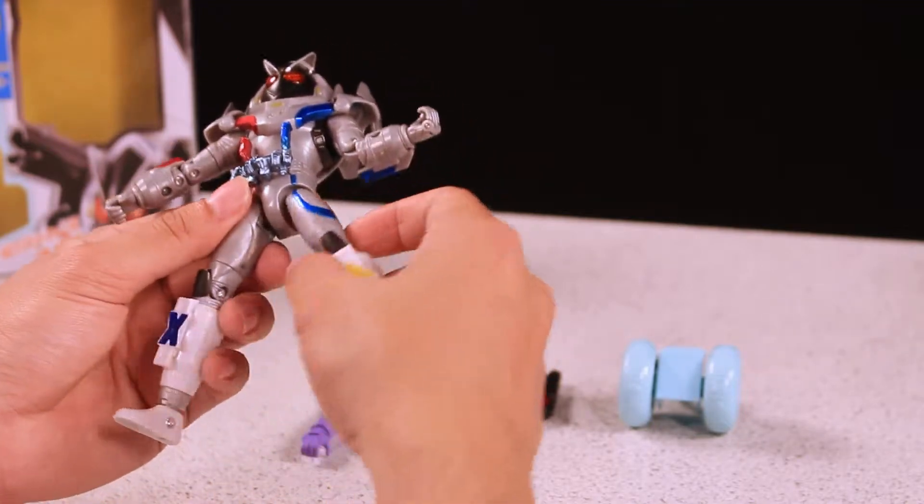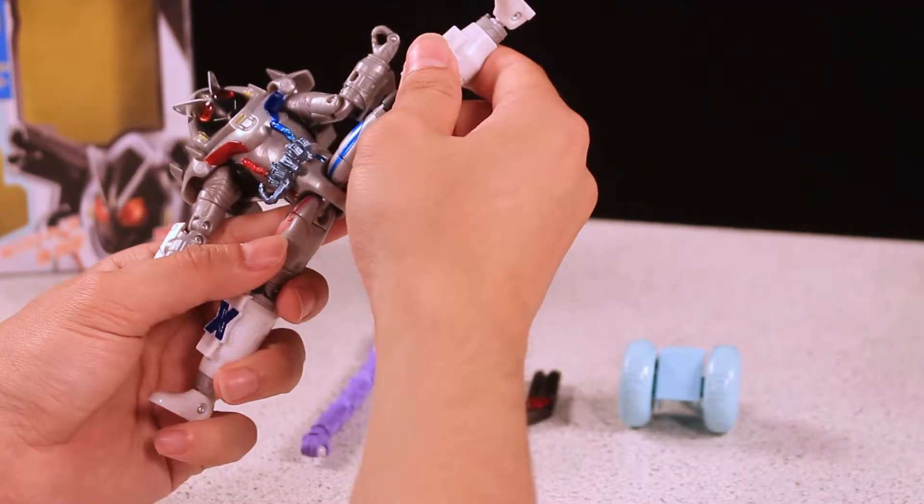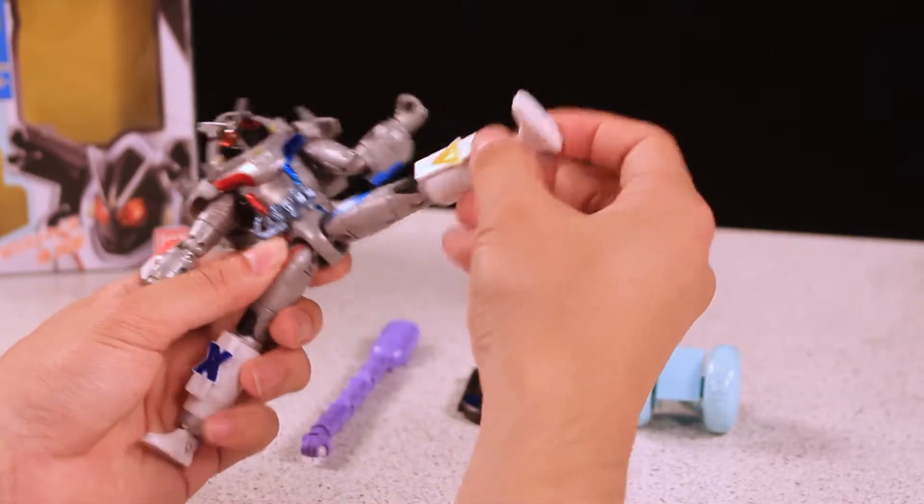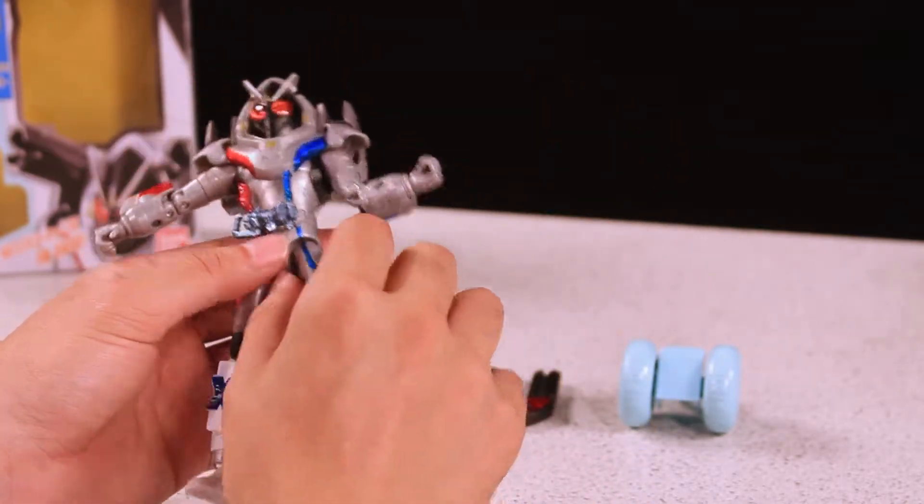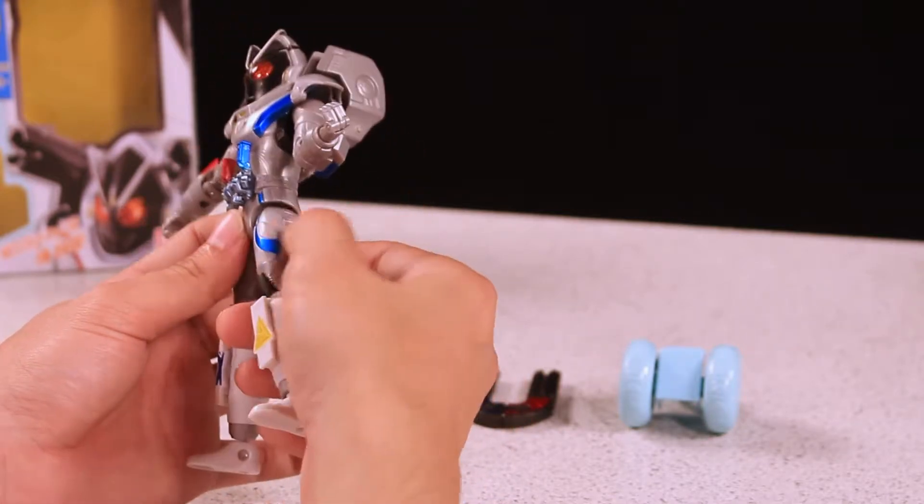You have a torso swivel right here. For the hip joint, you can do the split. It's pretty nice.